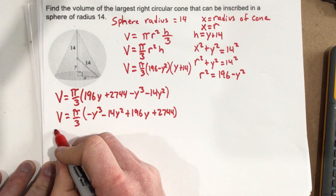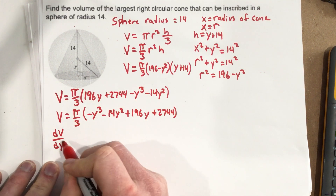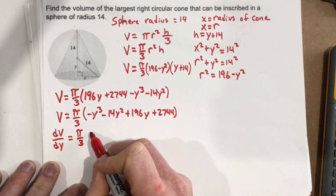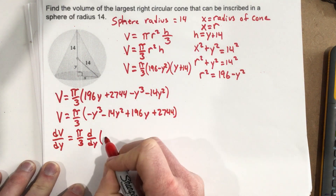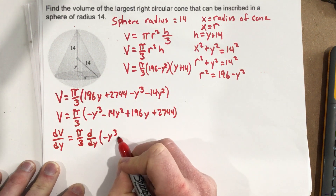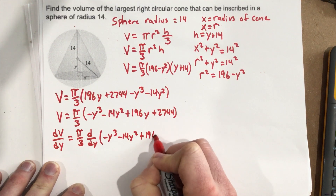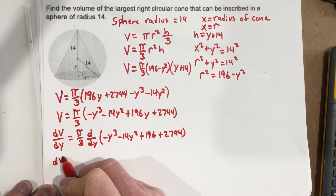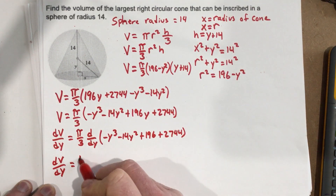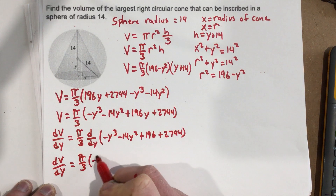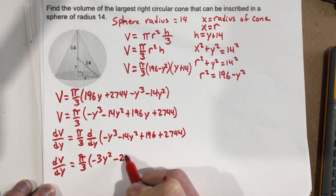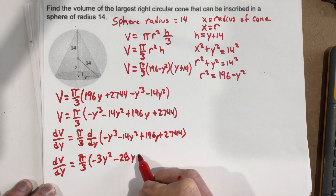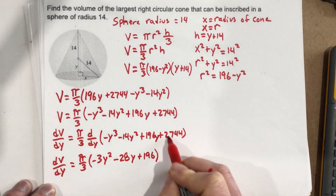Taking dV/dy: the derivative equals π/3 times the derivative of (−y³ − 14y² + 196y + 2,744) with respect to y, since π/3 is a constant we put it outside. That gives dV/dy = (π/3)(−3y² − 28y + 196). The constant 2,744 disappears.